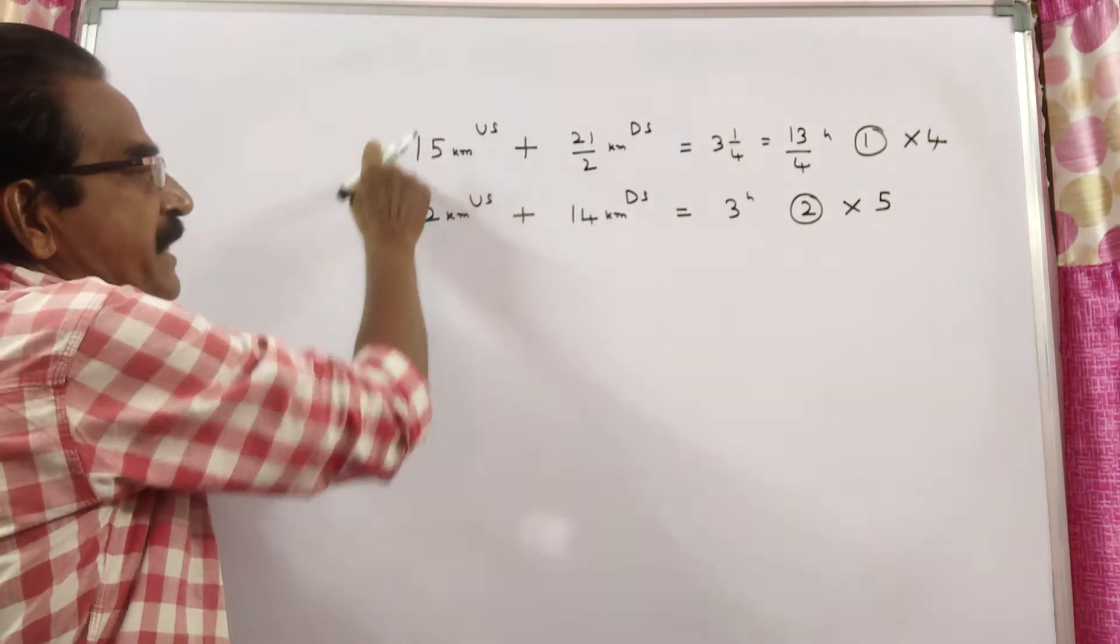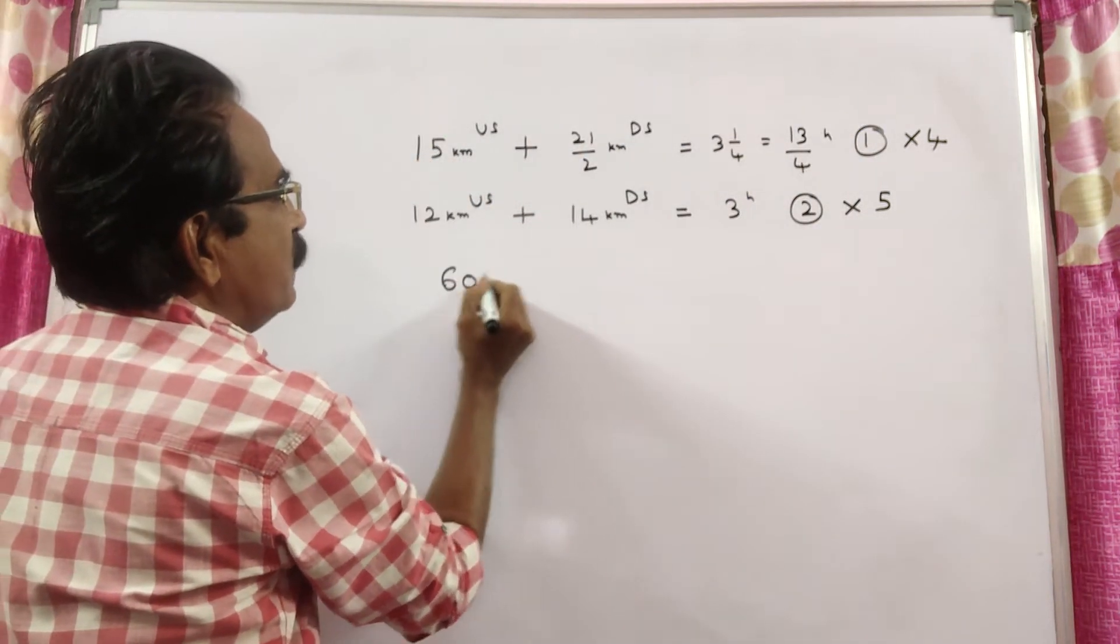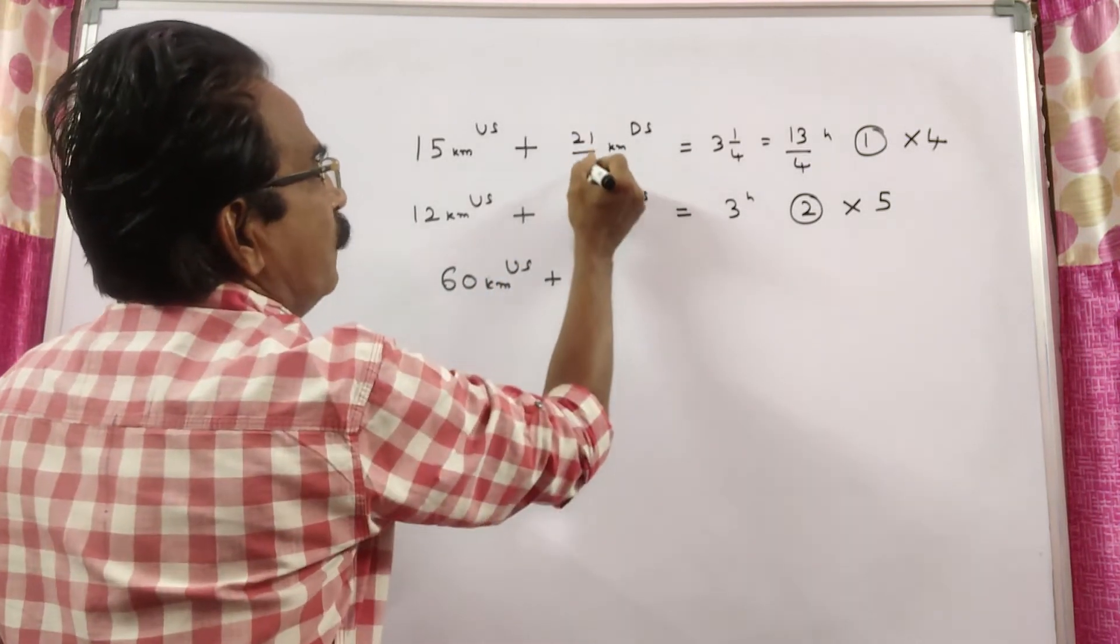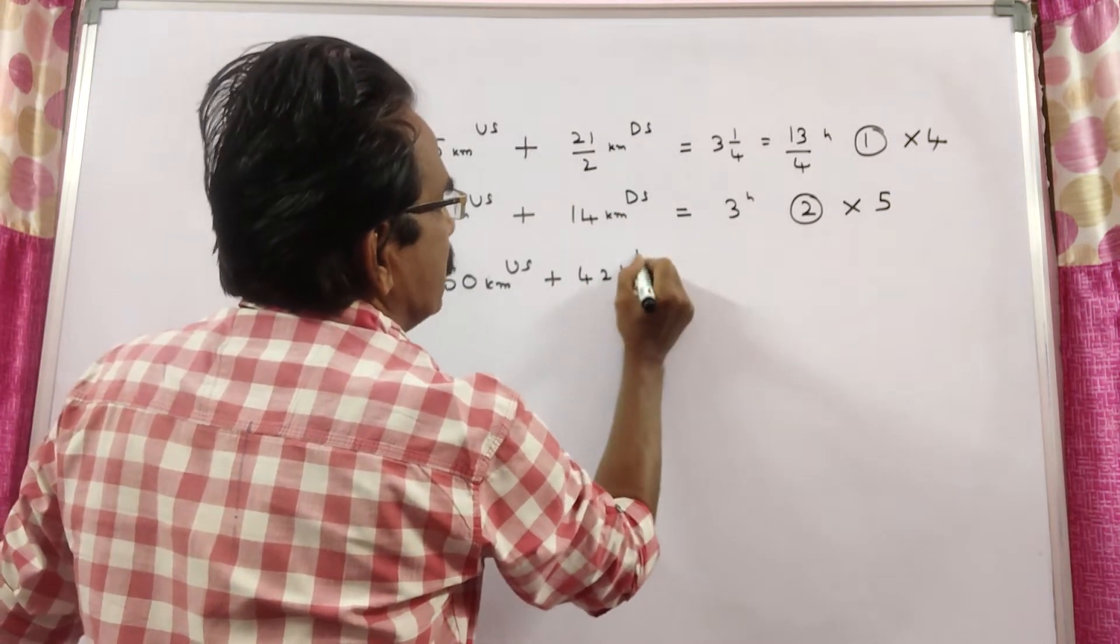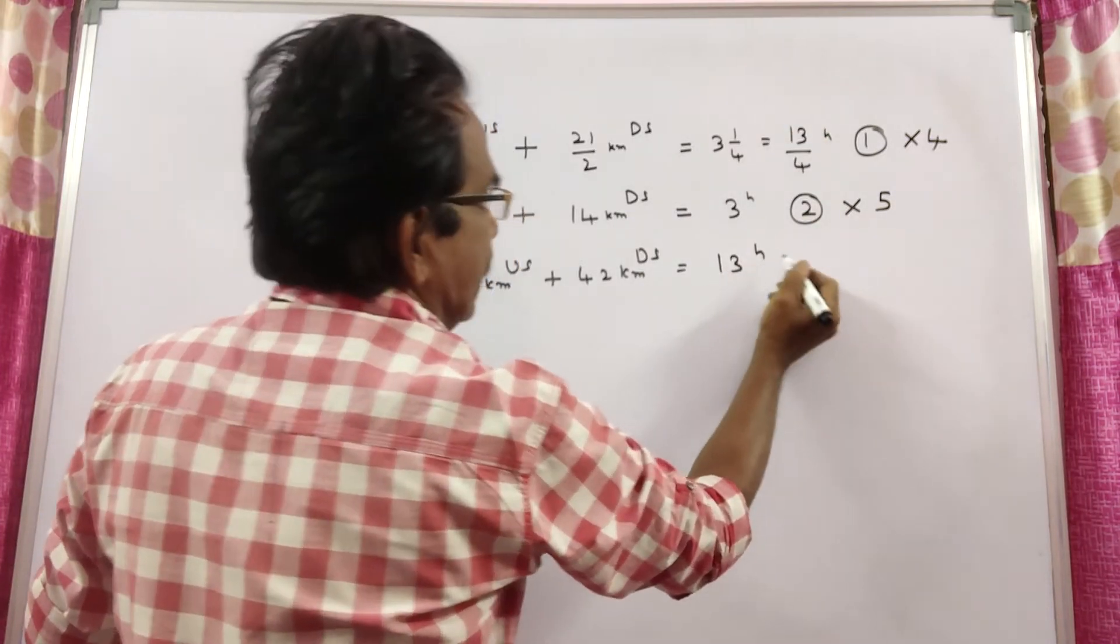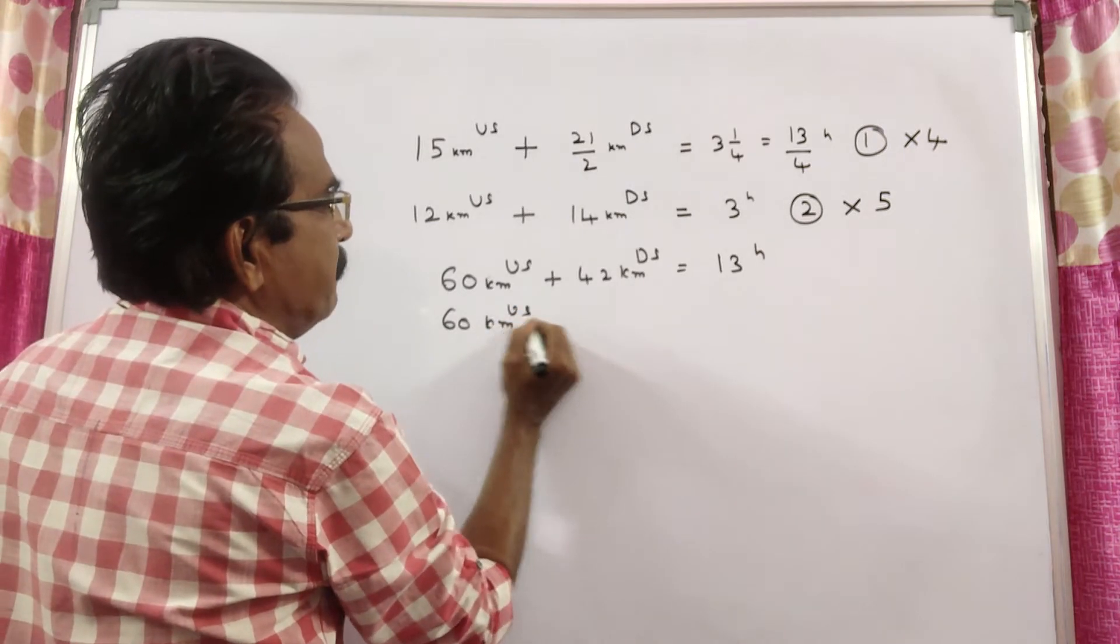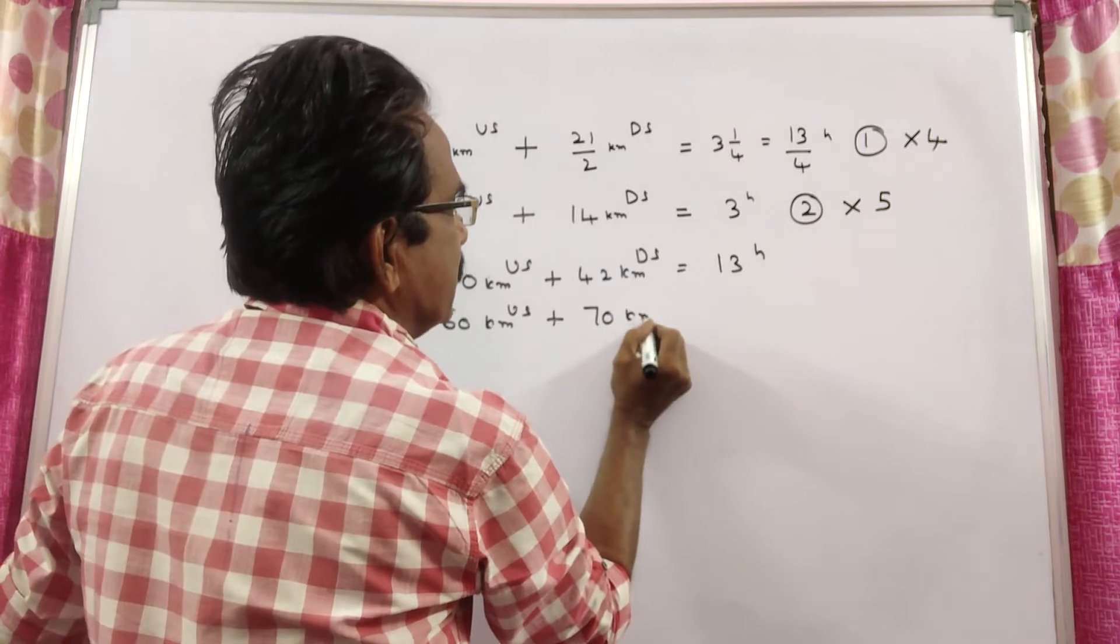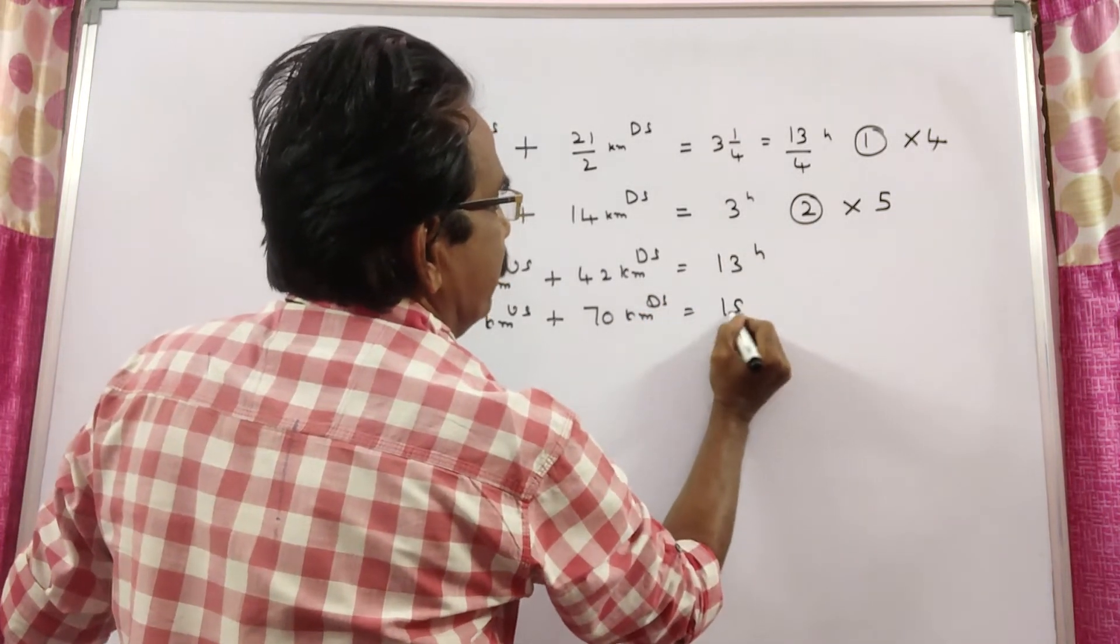I am trying to equate these two times. 4 fifteens 60 kilometers upstream plus 4 into 21 by 2, 42 kilometers downstream is equal to 4 into 13 by 4, 13 hours. 5 twelfths 60 kilometers upstream plus 5 fourteens 70 kilometers downstream in 5 threes 15 hours.